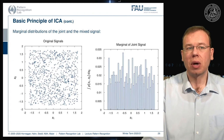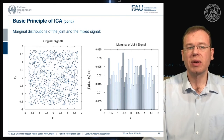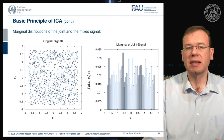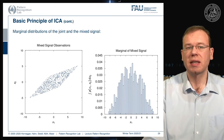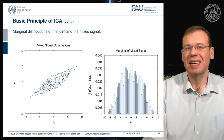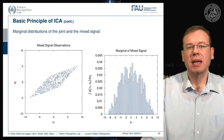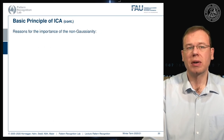Looking at the marginal distributions of the joint and mixed signals: for s1 and s2, the marginal of the joint probability closely resembles a uniform distribution, as we defined. However, when we compute the marginal distributions of the mixed observations, the result looks much more Gaussian. This confirms that mixing independent components increases their Gaussianity.